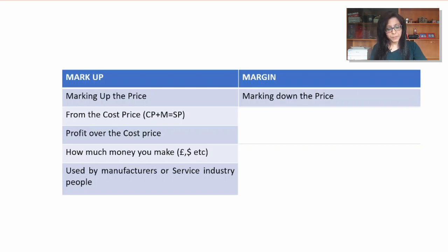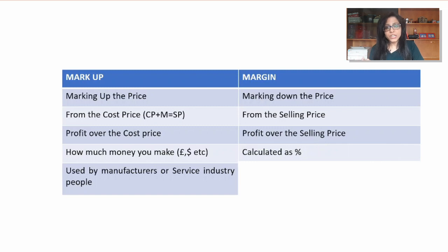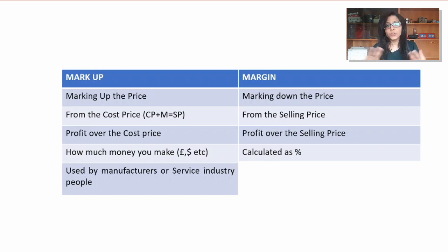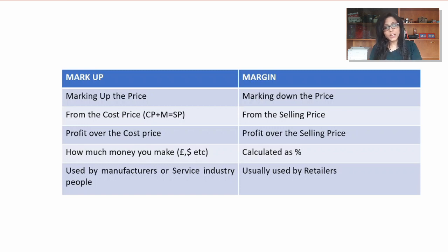Now let's look at margin. In margin, it is marking down the price — compared to marking up the price, you're marking it down from the selling price. So it is profit over the selling price. In markup, the base word is cost price; in margin, the base word is selling price. Margin is usually calculated as a percentage — people say 'I want to make 40% margin' or '20% margin.' Margins are usually used by shopkeepers or retailers.